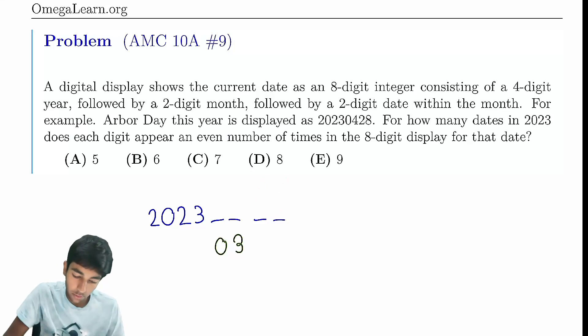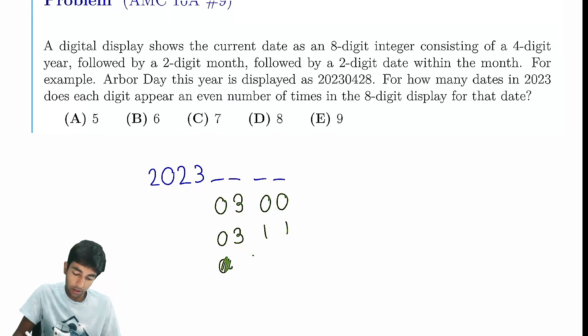So now it's just a little bit of casework, and this is a little bit annoying, but it's okay. We can have... Let's just take a look at all the possibilities here. We can have 0, 3, 0, 0, 0, 3, 1, 1, so on, right? All the way till 0, 3, 9, 9. Those are our only possibilities.